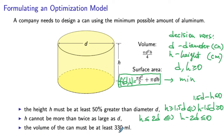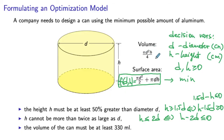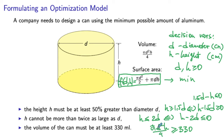The last consideration is that the volume must be at least 330 milliliters. Units of measure are very important here: for the volume formula to give milliliters, the diameter and height must be in centimeters since cubic centimeters equal milliliters. The constraint is pi*d²*h / 4 ≥ 330. This constraint is cubic — d²*h is a cubic term — so our model is highly non-linear: a quadratic objective, two linear constraints, and one cubic constraint. Both decision variables are non-negative.